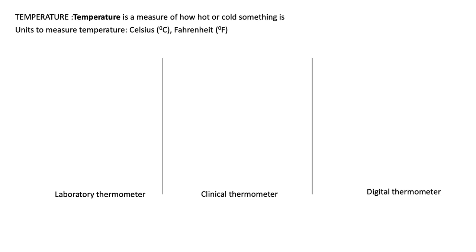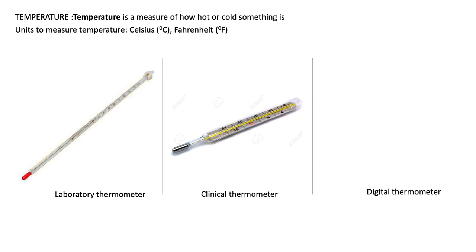There are three types of thermometers. The laboratory thermometer is very long with a bulb at the end and is used in science, chemistry, biology, and physics labs only for performing experiments. The clinical thermometer is very small compared to the laboratory thermometer and is used by doctors, nurses, and people at home to find out how hot the body is - to measure body temperature.